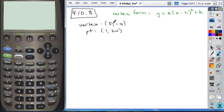And so because they give us the vertex, we can take this equation right here and we can plug in the h value, which is 5, and the k value, which is negative 4. And so we have this portion of our equation. All we need to find is a.